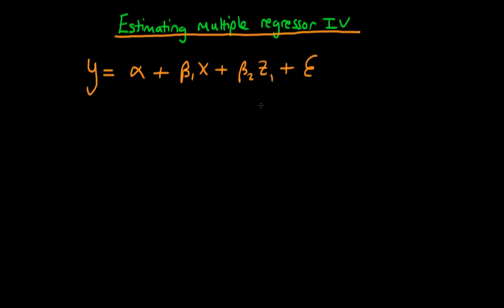And the idea with multiple regression IV estimation is that we use z1 as an instrument for itself and we use another instrument z2 for x. But what does it actually mean to use z1 as an instrument for itself and z2 as an instrument for x?